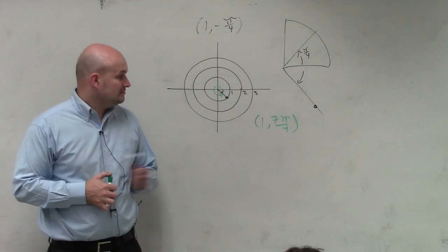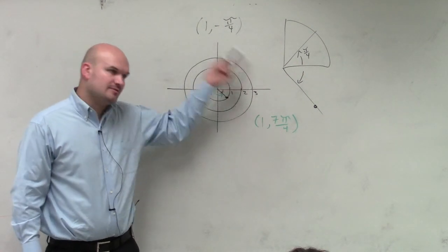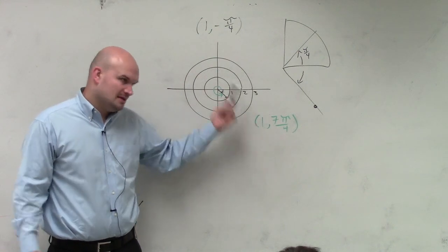So that's one angle. Now, could you do infinitely many of these? Could you keep on adding like 360 or 2 pi to that? And you get infinitely many angles.